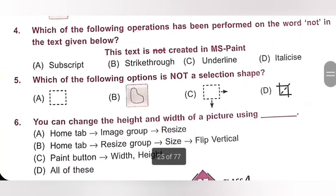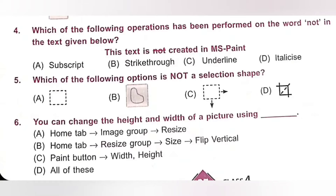Question 4: Which of the following operation has been performed on the word 'not' in the text given below? A. Subscript, B. Strike Through, C. Underline, D. Italicize. Strike Through effect draws a line in the middle of the text. One line is passing through the center of the word — it is the Strike Through effect. Option B is the correct answer.